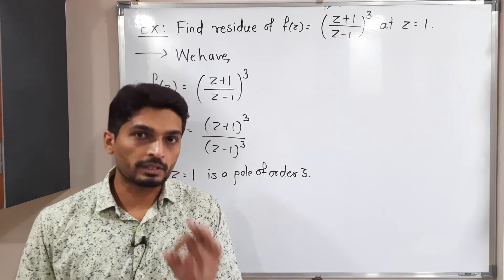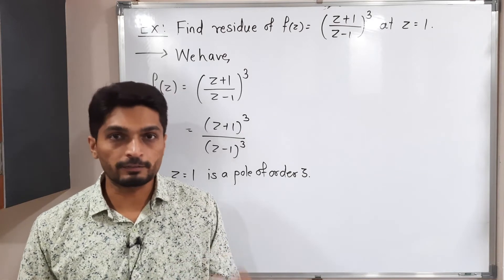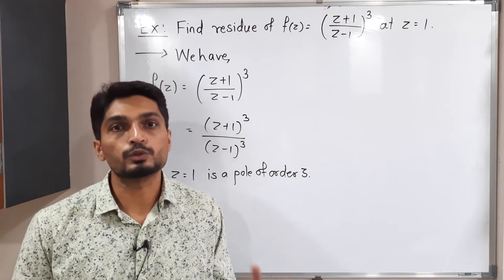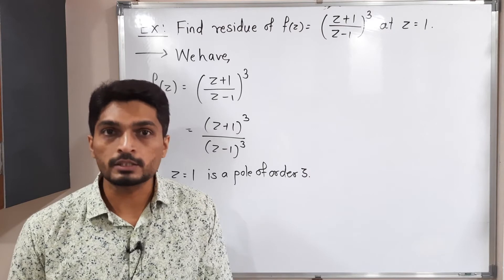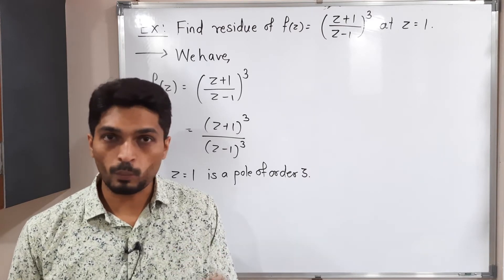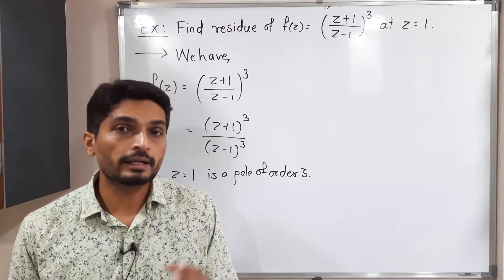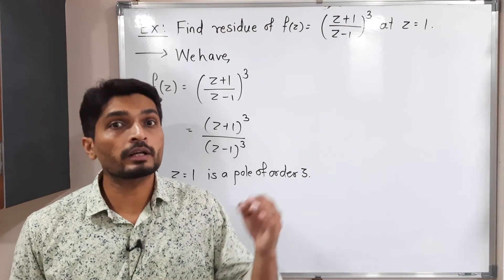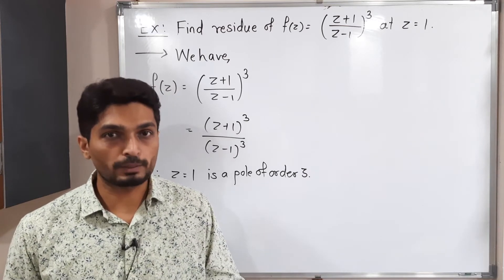So to find residue, we have three different techniques. First, we have a definition - that means with the help of Laurent series, you can find residue. Second, if you have a pole of order 1, we have one formula. And third, if you have a pole of order m, we have a next formula.